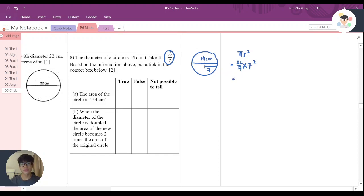As you know, 7 squared is 7 times 7, so I can simplify one of the 7s, and 22 times 7 is 154 cm squared. So this is basically part A. I know the answer is true. Let's look at the second one.